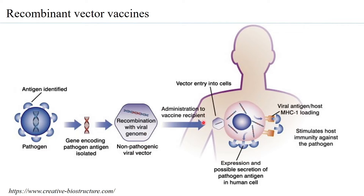When the virus enters the human, it enters cells through transduction. Once inside the cell, the virus multiplies, and as it multiplies, the gene for the particular antigen gets expressed as well. Transcription and translation of the gene occur, so the antigen is produced inside the cell. This antigen can then be presented on the surface through MHC class 1.